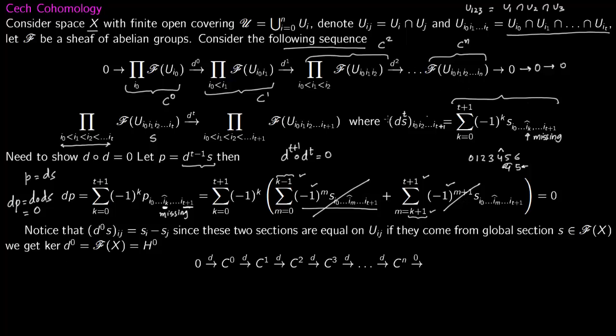Therefore you have a complex: 0 to C^0, C^1, C^2, C^3 and so on, with d composed with d is zero. So you can talk about cohomology groups.